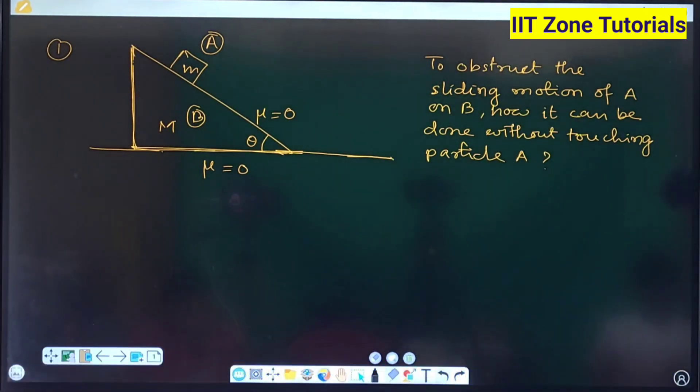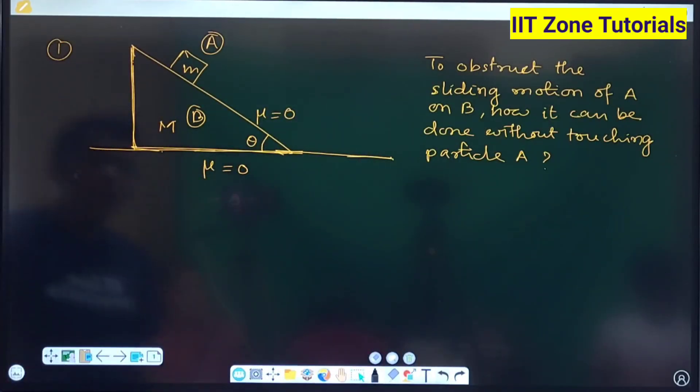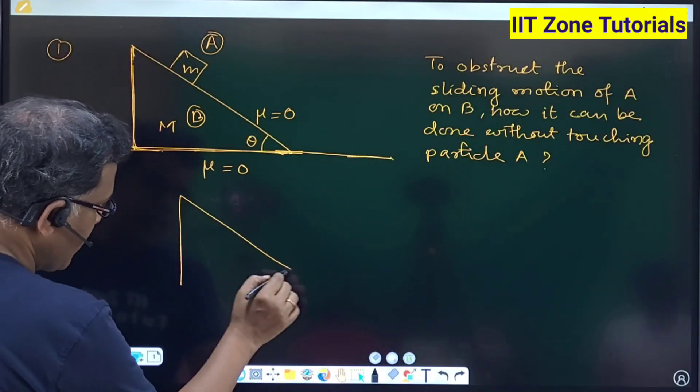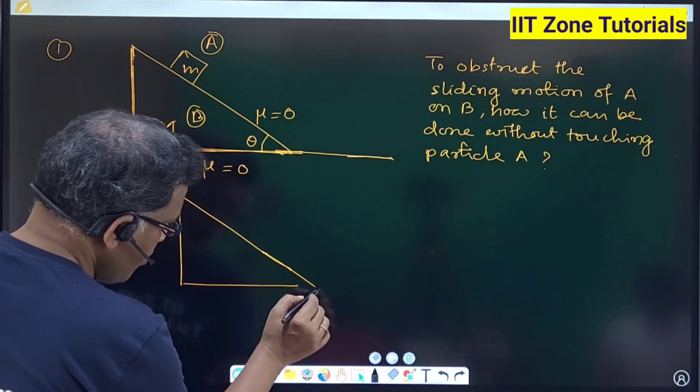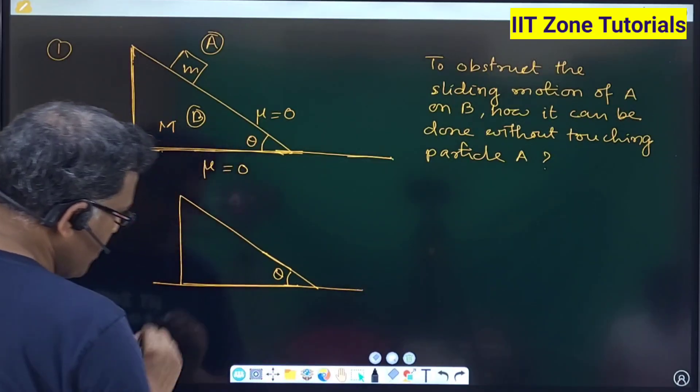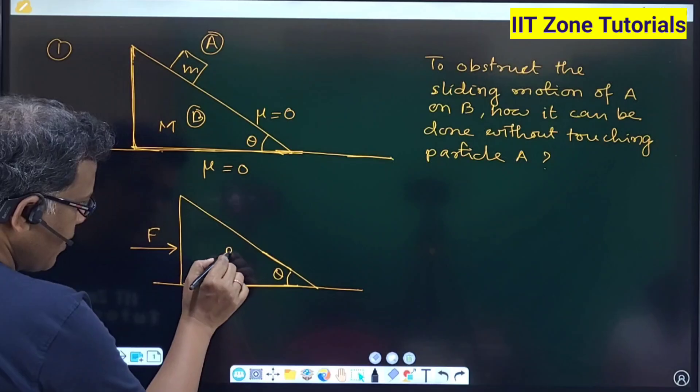So in that sense it is an absolutely correct approach that pushing the capital M in the rightward direction. You considered this thing, that is correct, absolutely. If you apply some force on capital M which is marked as